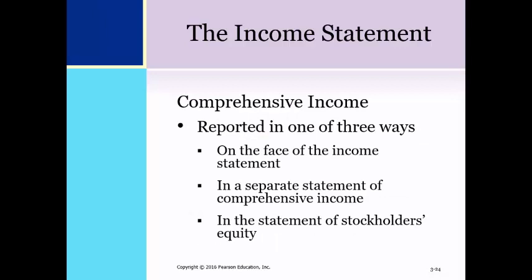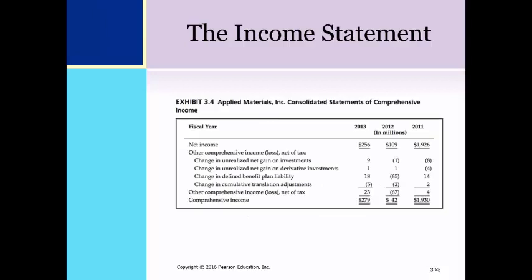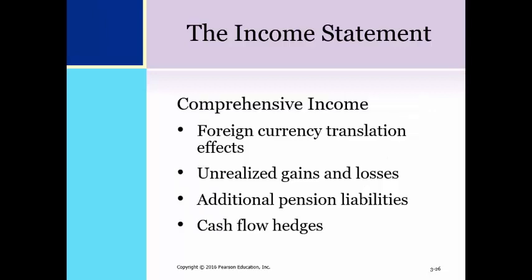Comprehensive income, as discussed in Chapter 2, is required to be reported on the face of the financial statements in the statement of stockholders' equity or in a separate financial statement. This is an illustration of the consolidated statements of comprehensive income for Applied Materials, Inc. for 2011, 2012, and 2013. Items required to be reported in comprehensive income include foreign currency translation effects, unrealized gains and losses on investments in debt securities, additional pension liabilities, and gains and losses in the fair market value of cash flow hedges.